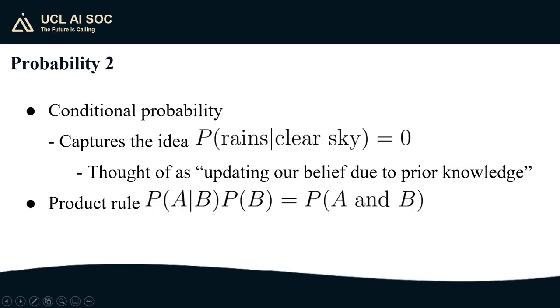In machine learning we want to use the information we already have in order to help us to make better predictions. This is where conditional probability comes in to help us. As a motivating example, for those of us in London we know that the probability that it rains on any given day is quite high but if it happens to be one of the few clear sky days we know that the probability that it's going to rain is going to be 0 at least in the next 50 minutes. We can capture this intuition by conditioning our probability on the observations that we have. Probability theory tells us about the product rule. The probability that event A happens given that B happens times the probability that B happens is equal to the probability that A and B both happen.